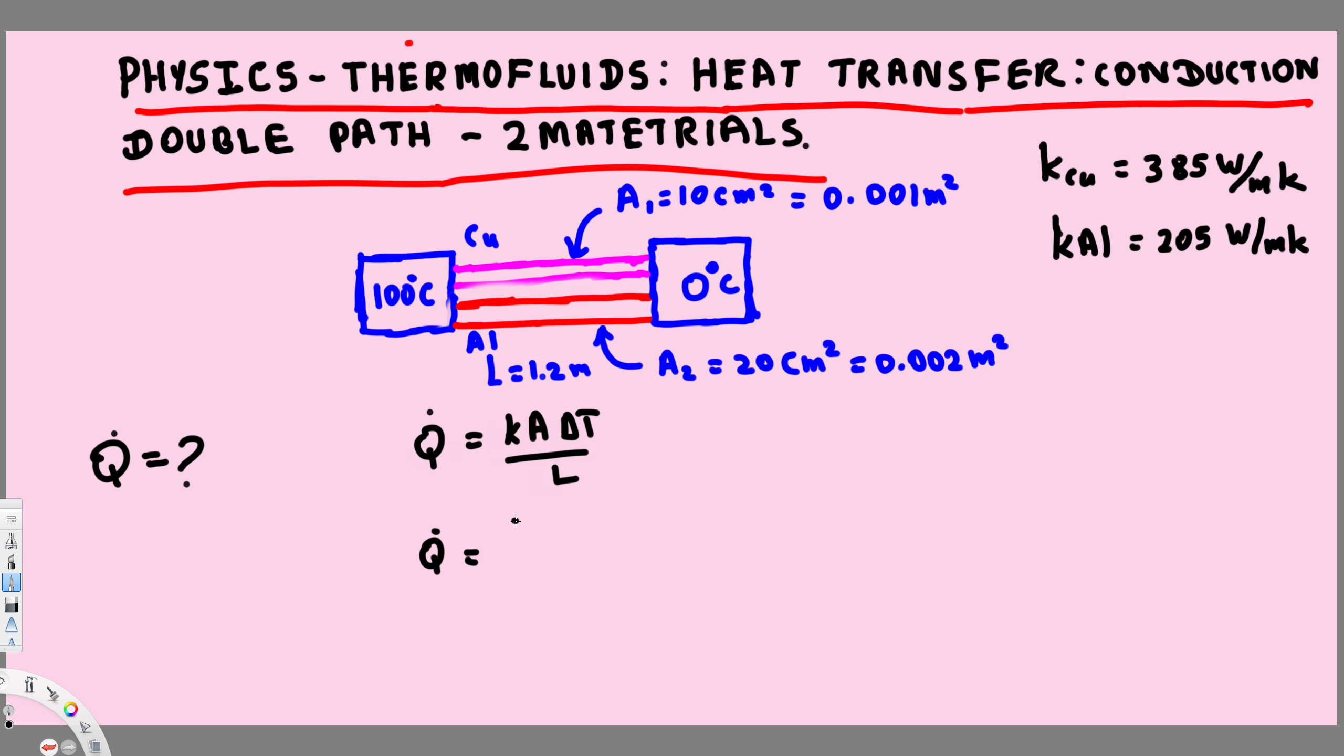So we're going to have this equation: Q dot equals k_cu times A_1, the thermal conductivity of copper times A_1, plus k_al, the thermal conductivity of aluminum, times the area of the aluminum bar, which is A_2. And then the rest is the same: delta T over L.